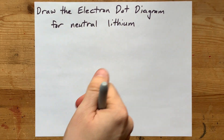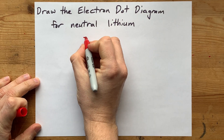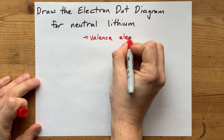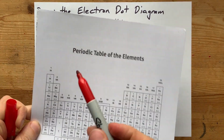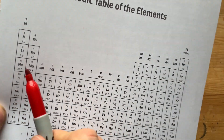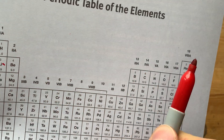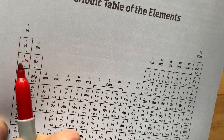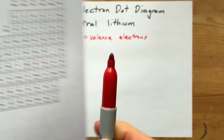Draw the electron dot diagram for neutral lithium. The thing you need to know about electron dot diagrams is that they only show valence electrons — only the electrons that are in the outer shell of the atom. For lithium, which is here, there are three electrons total in neutral lithium because it's element number three, but the first two are in the first shell, and the third is in the second shell. So the only electron in the outer shell is that third one.